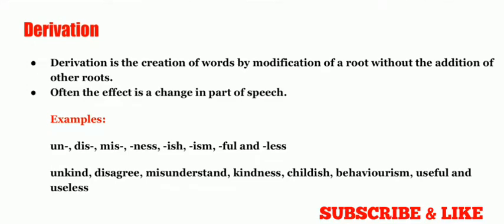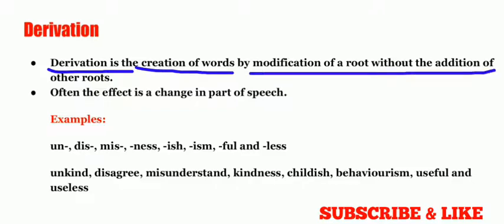How are words formed with the help of derivation? Derivation is the creation of words by modification of a root without the addition of other roots. In derivation, we modify the root of a word, but we don't add any other roots. Often the effect is a change in part of speech.